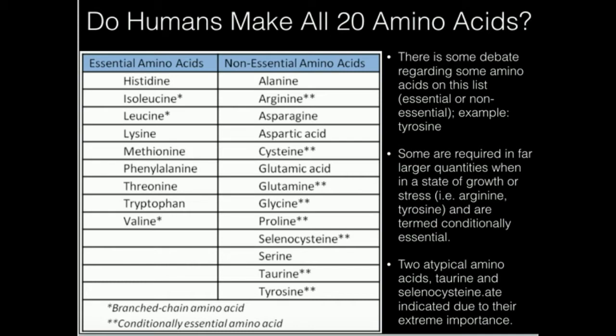If there's ever a nutrient, including an amino acid, that's termed non-essential, that means we can actually build it from scratch, which is termed de novo. We can build it de novo from everyday things floating around the cell — we can make it ourselves.